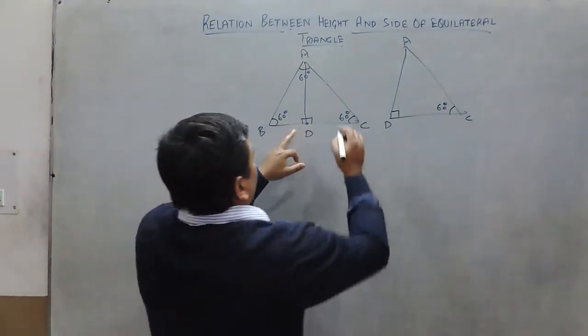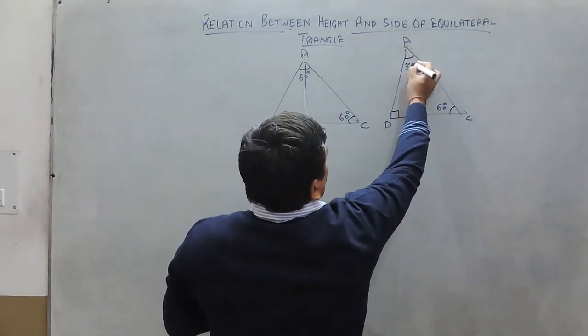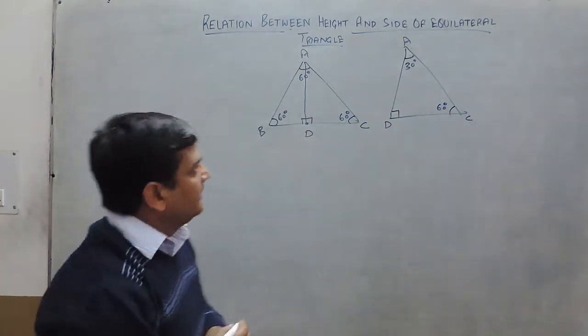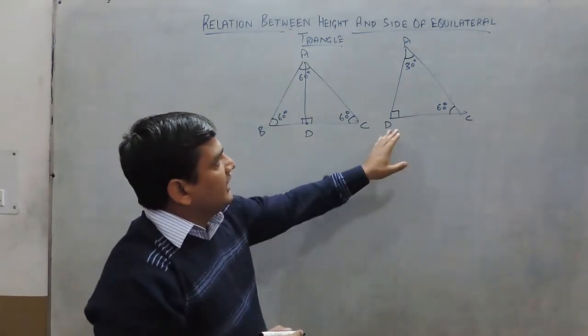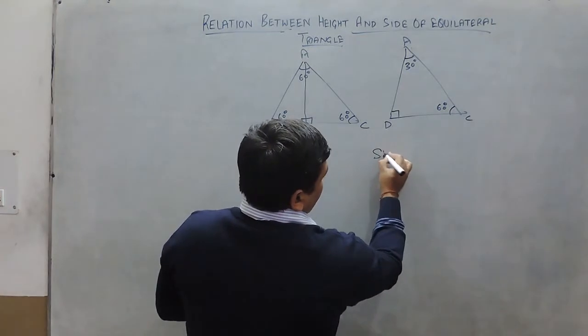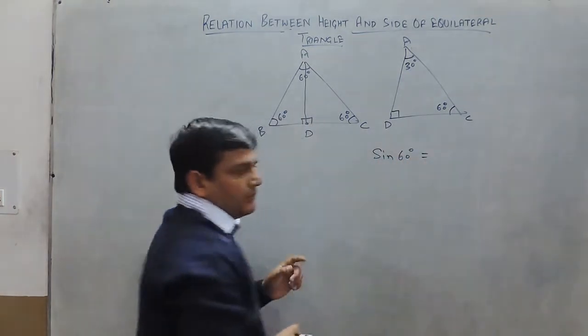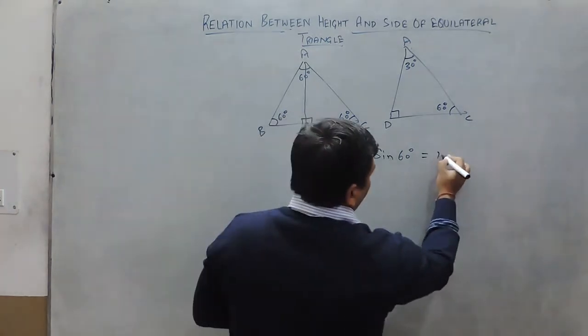Therefore, this angle CAD is 30 degrees. Therefore, if we take right triangle ADC here, sine 60 degrees equals perpendicular upon hypotenuse.